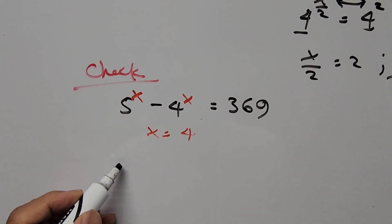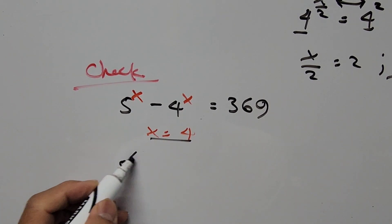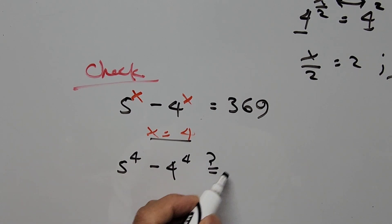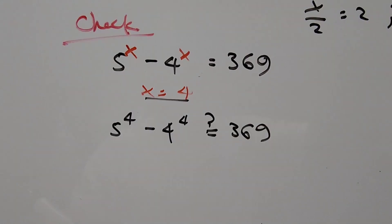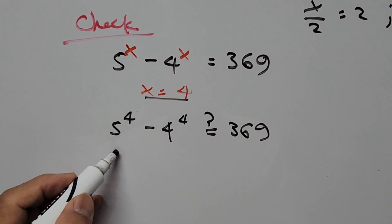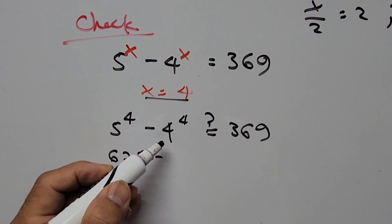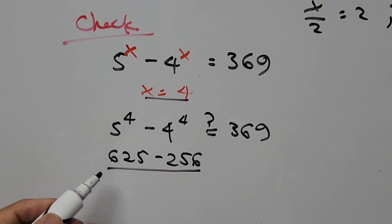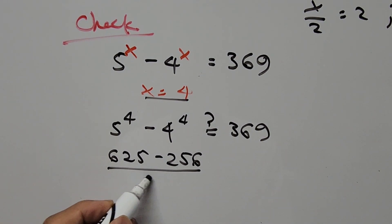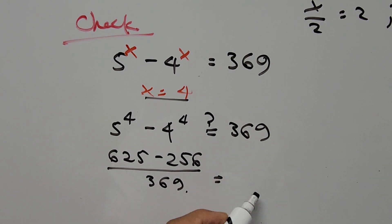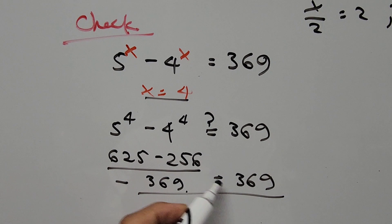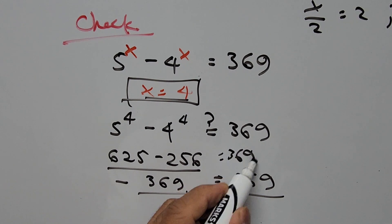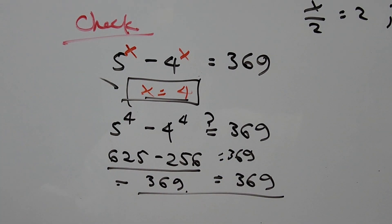Let's check our answer. Our equation is 5 to the power of x minus 4 to the power of x equals 369. With x equal to 4: 5 to the power of 4 is 625, and 4 to the power of 4 is 256. Subtracting: 625 minus 256 equals 369. This confirms that x equals 4 is correct.